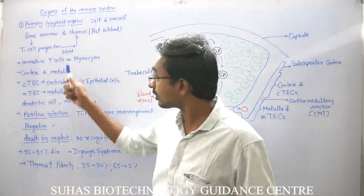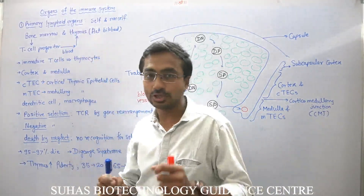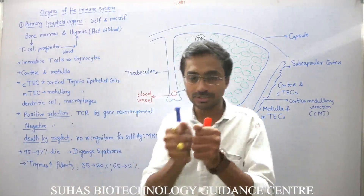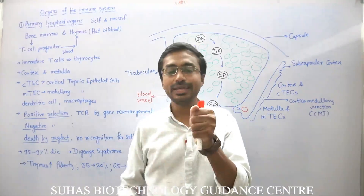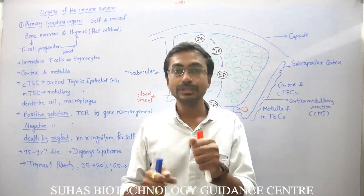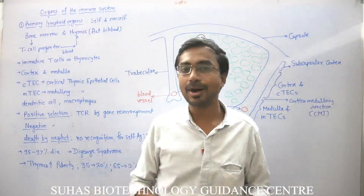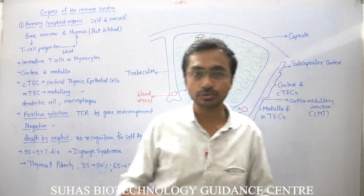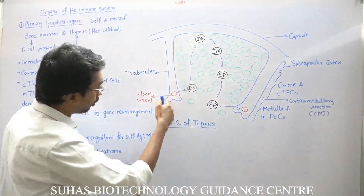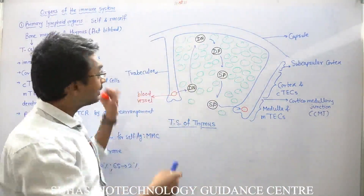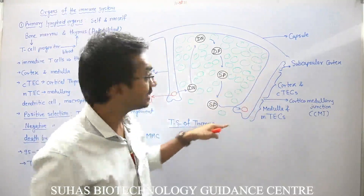The Thymus is actually a bi-lobed organ — two lobes are there — but in one lobe there are many compartments, and these compartments are formed because of extensions called Trabeculi. This is one Trabeculi, this is another.